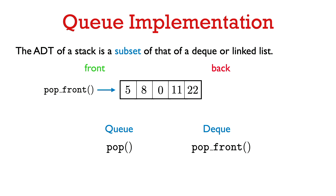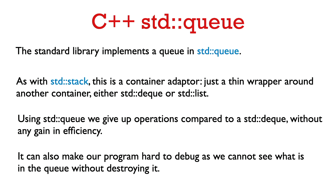So we can implement all of the operations of a queue directly by using a deque. To use a queue in C++, you can use the standard library's std::queue. As with std::stack, this is a container adapter — just a thin wrapper around another container, in this case either a deque or a list.